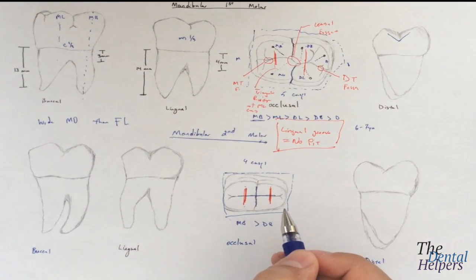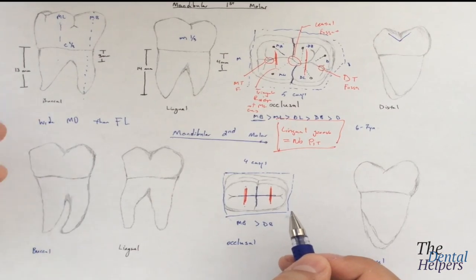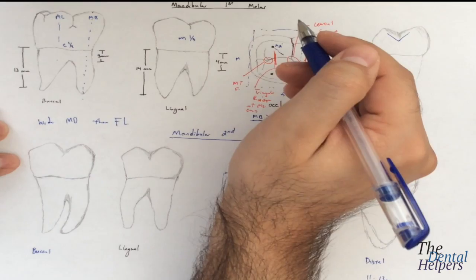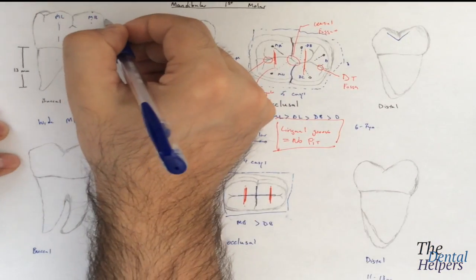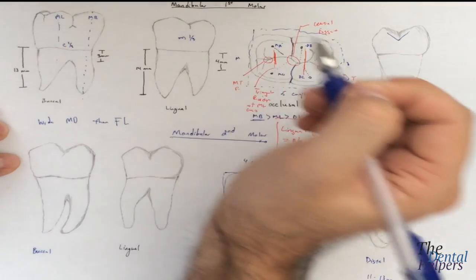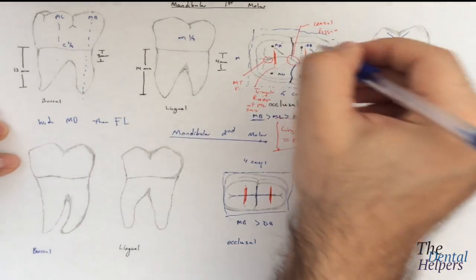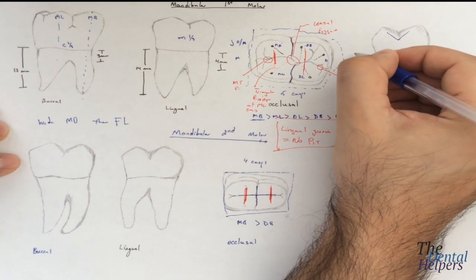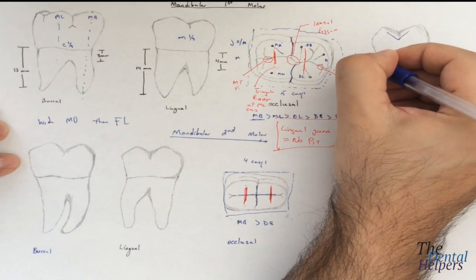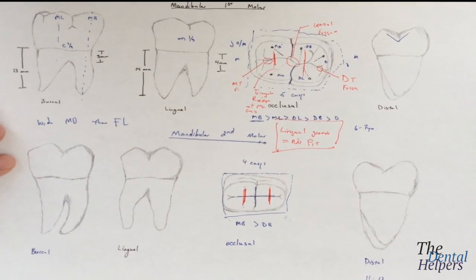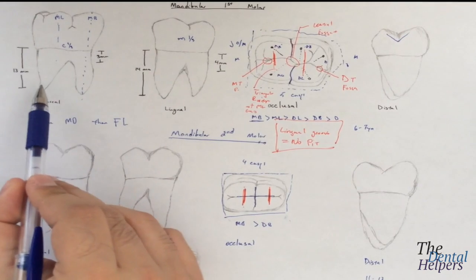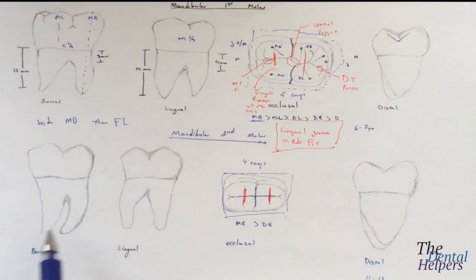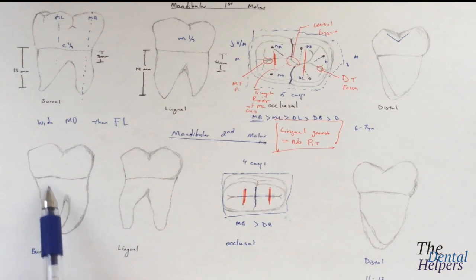In terms of the contacts, for all your mandibular teeth it's just about the same. The mesial contact is going to be at the junction of the occlusal and middle third, while the distal contact is going to be the middle of the crown. This is exactly the same in the mandibular second. If we look at the root spread, there's a wider root spread and a shorter trunk on the mandibular first, while on the mandibular seconds we have less of a root spread and the roots are longer.